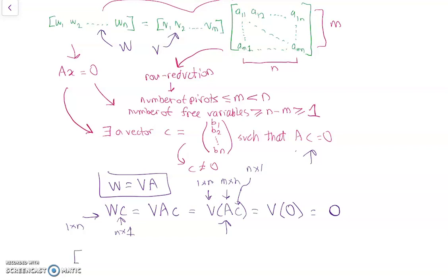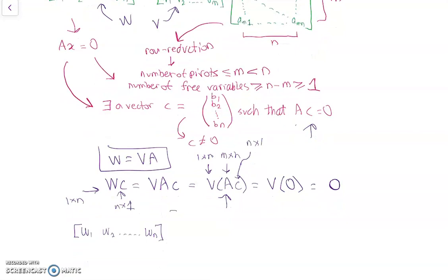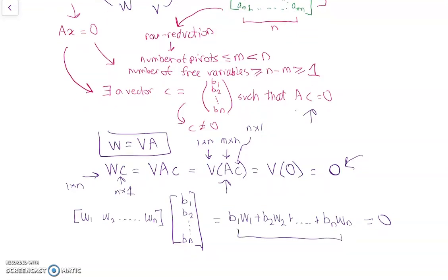Okay. So now W times C is W1, W2, WN, and C is B1, B2, BN. Okay, this is going to be a linear combination, B1W1 plus B2W2 plus dot dot dot plus BNWN. Okay. And this is supposed to be equal to 0, because it's the right-hand side. So what we see is this is a linear combination of W's giving you 0.